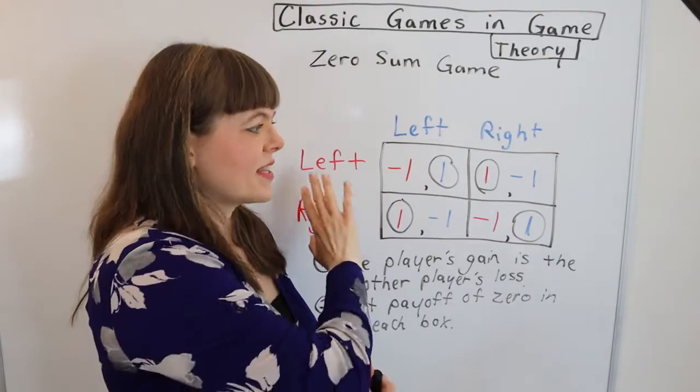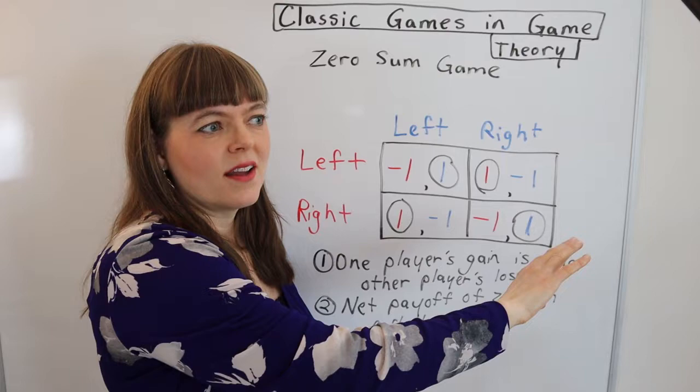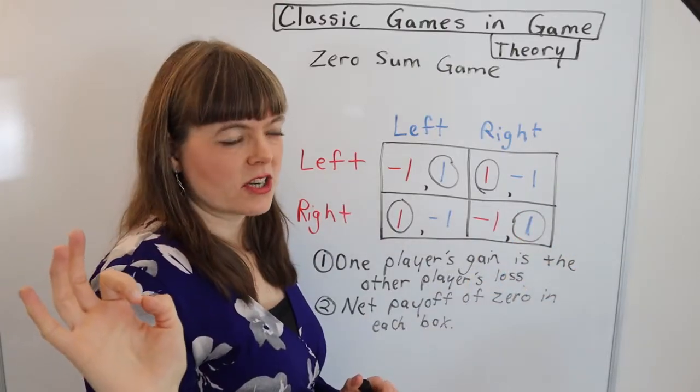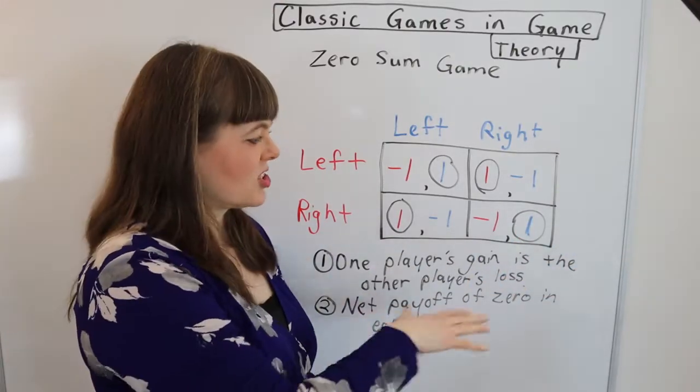If you add the same number to everything in the table, the Nash equilibrium will never change. The question is, does that change the actual game?